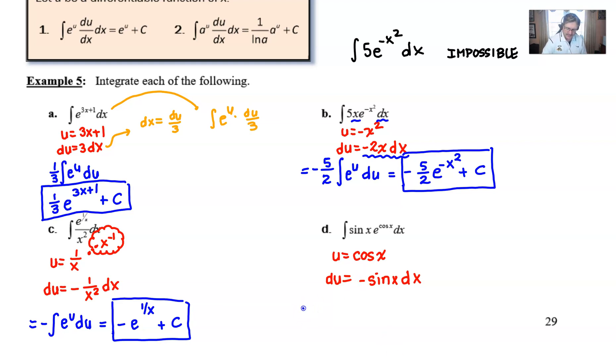We're going to bring that negative out in front, and then we just integrate e to the u with respect to u, which looks an awful lot like our previous problem. It's exactly the same, except for the fact that the u is different. And so we'll write up that u as it is, and there we have it, our final answer.